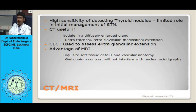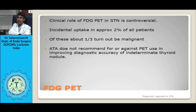On scintigraphy, a cold nodule does not take up isotope, a warm nodule takes up normally, and a hot nodule takes up more than the surrounding tissue. Cold nodules are found in 80 to 85% of thyroid scans, of which 20% are malignant. Warm nodules are malignant 10% of the time, while hot nodules are predominantly benign, with only 5% being malignant. Most scans do not change management, and there is ongoing controversy about whether thyroid scintigraphy is needed at all in the workup of a solitary thyroid nodule.